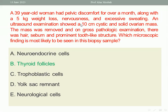The answer is thyroid follicles because there are manifestations of thyrotoxicosis, and this is related to the ovarian tumor called struma ovarii. It happens with teratoma. The case is a teratoma containing hair, septum, and prominent tooth-like structure, but also with clinical features of thyrotoxicosis like weight loss, nervousness, and excessive sweating. So the microscopic finding most likely seen is thyroid follicles.